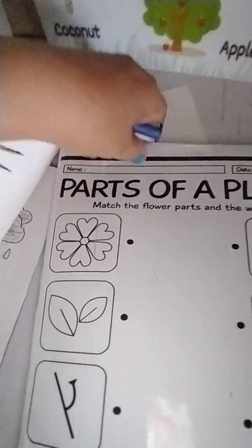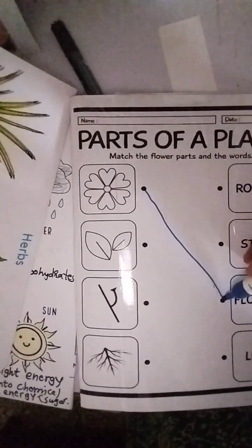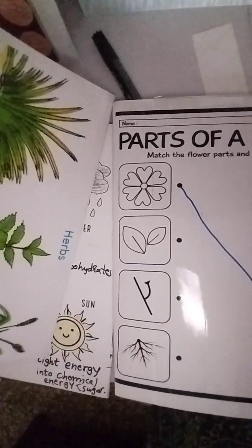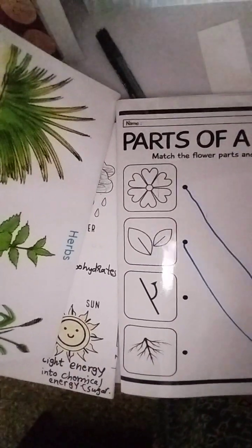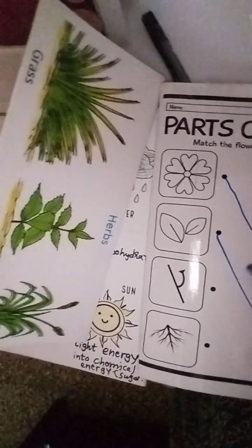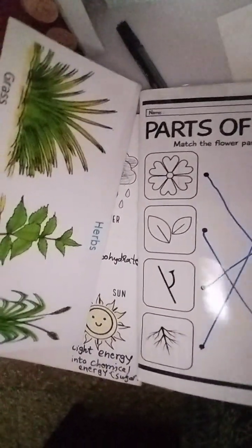Now let's do the next one. We have to match the parts of the plants. What is this? Flower - we have to match with flower. What are these? Leaves. What is this? Stem. These are roots - we have to match with roots.